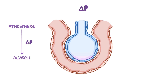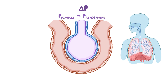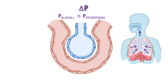At the end of inspiration, the alveolus becomes filled with oxygen-rich air from the atmosphere, which increases the pressure inside until it equals atmospheric pressure. At this point, there's no pressure difference to drive more air into the alveolus. During expiration, the muscles relax, allowing the lungs to spring back to their normal size, leading to a decrease in volume. As the volume of the alveolus goes down, the pressure inside goes up to become higher than atmospheric pressure, creating a pressure gradient that pushes air from the alveoli out into the atmosphere.